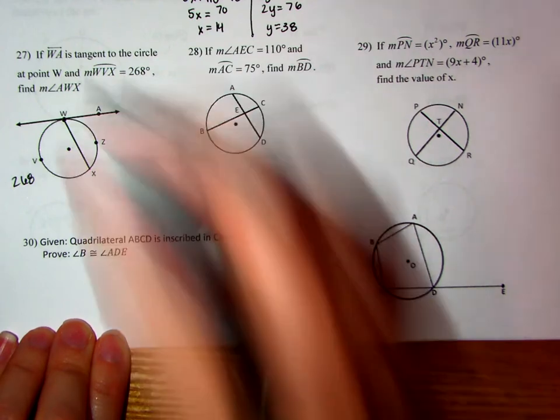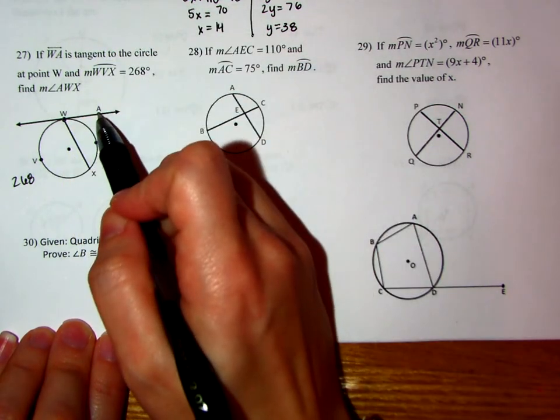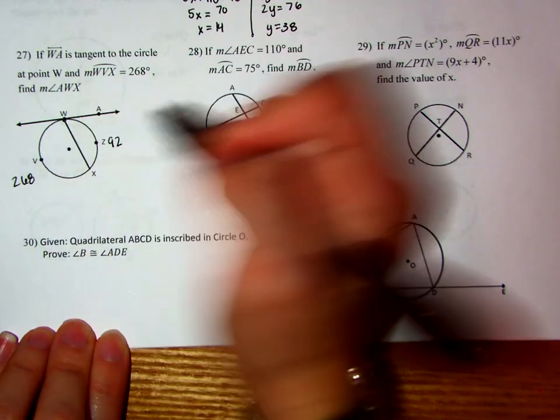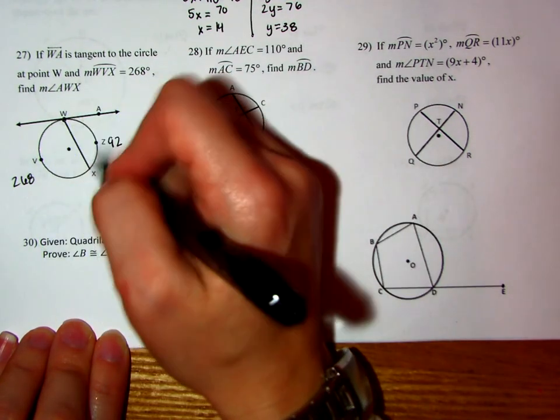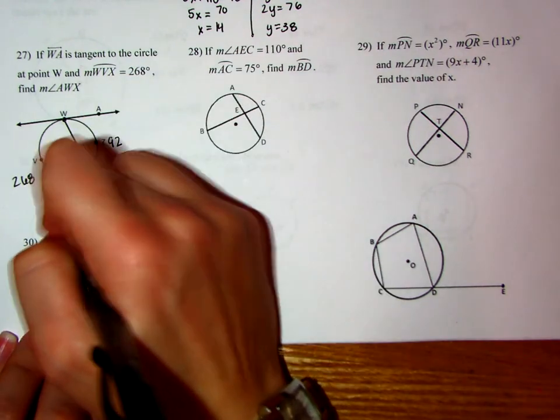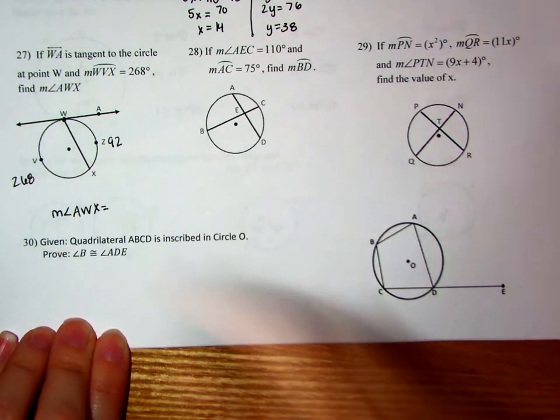And what we're left with is 92 degrees. Now, we're supposed to find the angle AWX. It's an inscribed angle because notice that vertex is on the circle. So it's the arc divided by 2. So what you're really going to do is 92 divided by 2. And what that leaves the measure of angle AWX to be is 46 degrees.